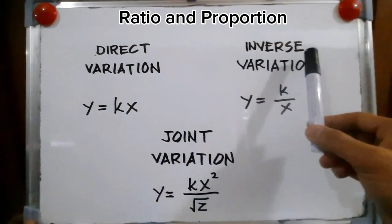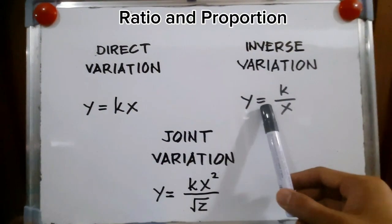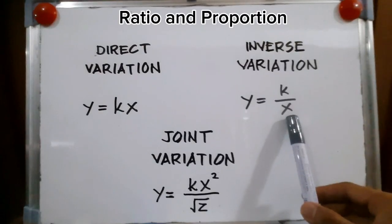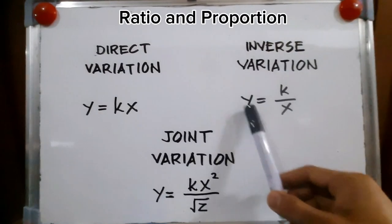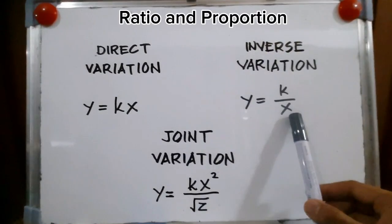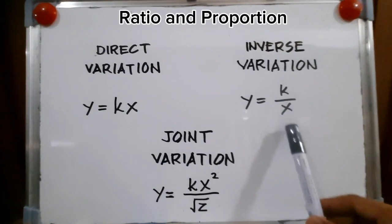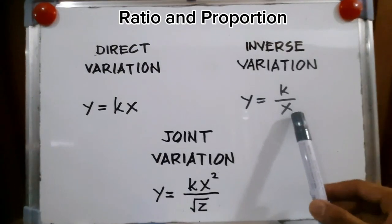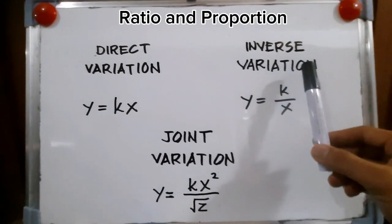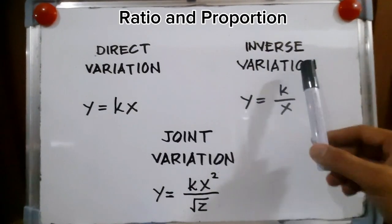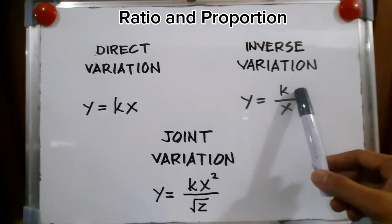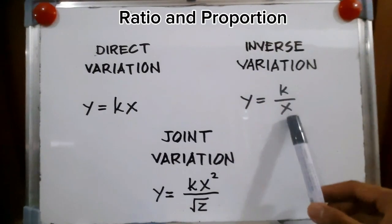In inverse variation, Y is inversely proportional to X. If Y goes up, then X goes down. If Y goes down, then X goes up, because they are inversely proportioned. K is still the constant of variation.